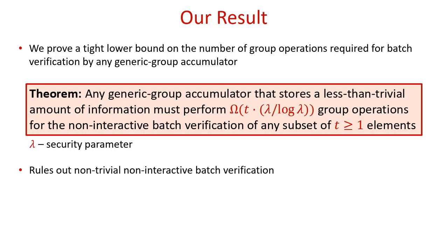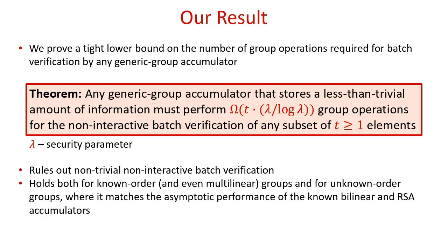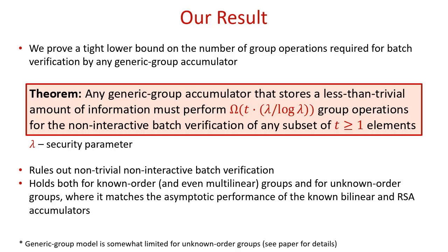In particular, this rules out non-trivial non-interactive batch verification. Our result holds both for known-order and even multilinear groups and for unknown order groups, where it matches the asymptotic performance of the known bilinear and RSA accumulators. It should be noted that whereas the generic group model captures generic computations in known order groups quite accurately, its variant that considers unknown order groups seems somewhat limited in capturing generic computations in such groups. Please see our paper for more details.